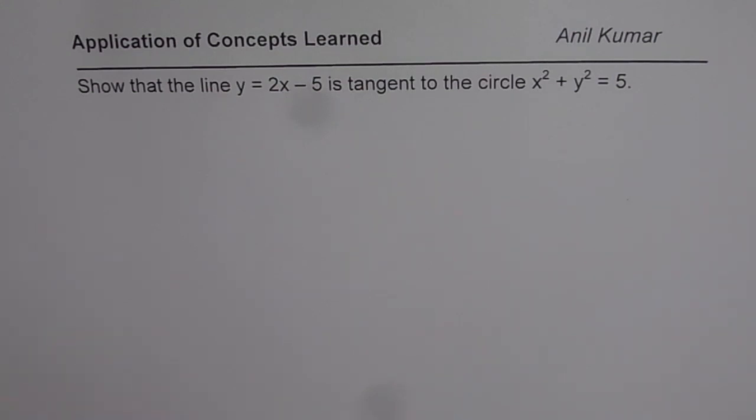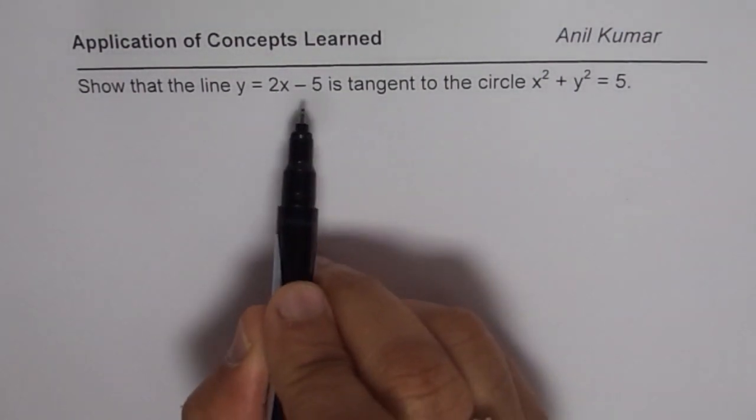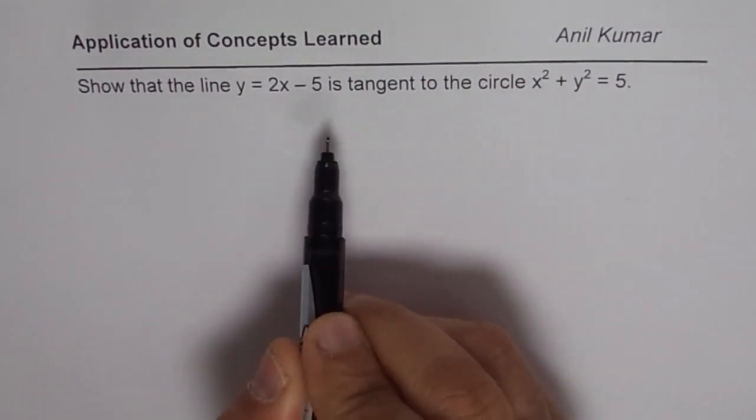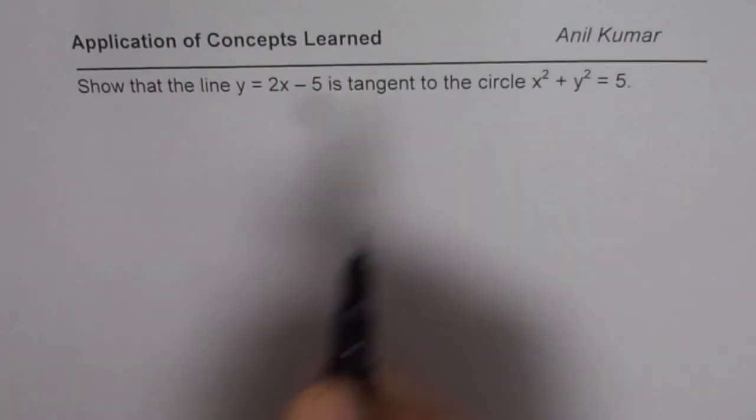Now the important thing here is, if this line is tangent to the circle, that means the system which is formed by the line and the circle has only one point in common. So that is the concept which we are going to use.